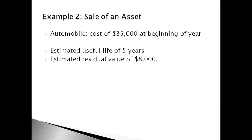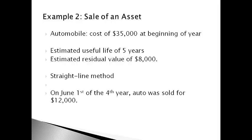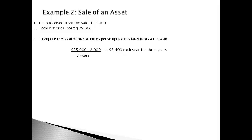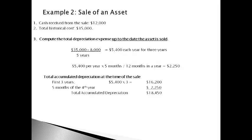Let's walk through an example of how to account for the sale of an asset. In this example, the company purchased an auto for a salesman for $35,000. The automobile was expected to be used for five years and then sold for $8,000. Depreciation expense was recorded using the straight-line method at the end of each of the first three years. On June 1st of the fourth year, the auto was sold for $12,000. The expense of using the car for the first five months of year four must also be recorded, and accumulated depreciation is totaled for the entire time the asset was used.